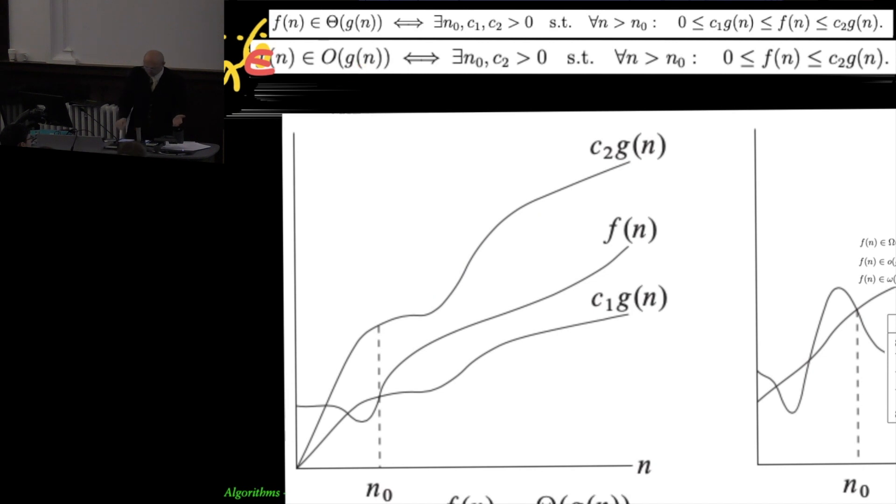Now notice that this big o of n, like I had in the example earlier, it could be a bound that is not tight. You could say n to the 10th is, a function that grows like n to the seventh is big o of n to the 10th, but that's not always useful. Whereas the theta because it bounds it from above and also from below is exactly the same growth rate.